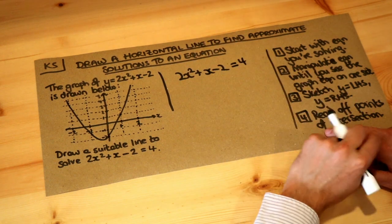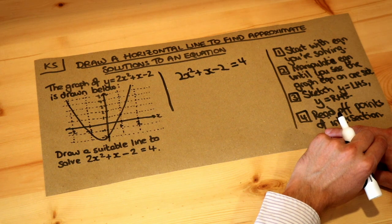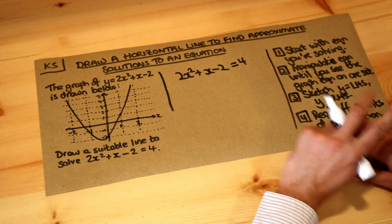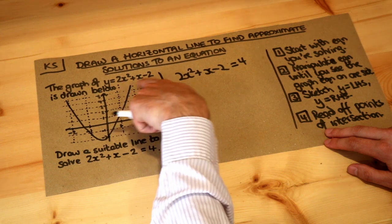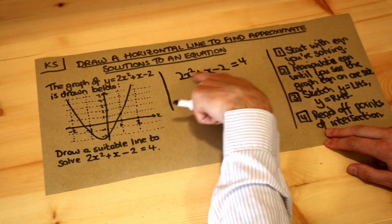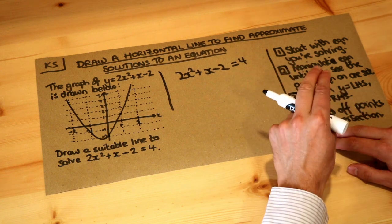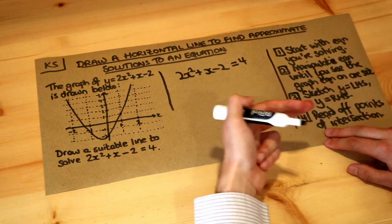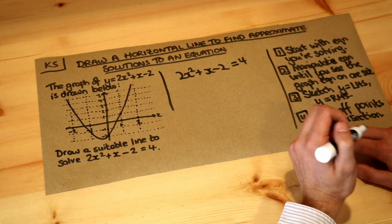What's step 2? Manipulate the equation until you see the graph equation on one side. Well the graph equation, or really the graph expression, is 2x squared plus x minus 2. That's the expression we're graphing. Now we already have that on one side of the equation so we don't need to do step 2. But in subsequent videos we'll look at harder questions where you would have to do something in step 2.